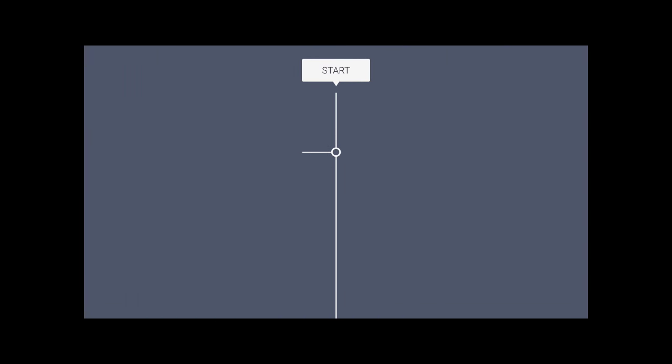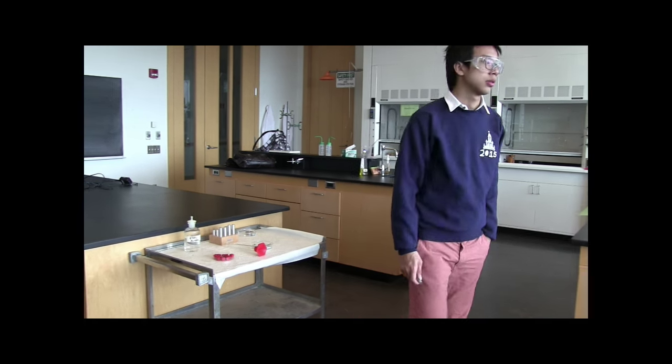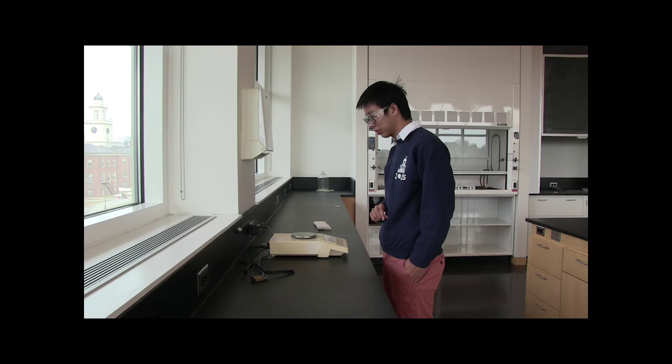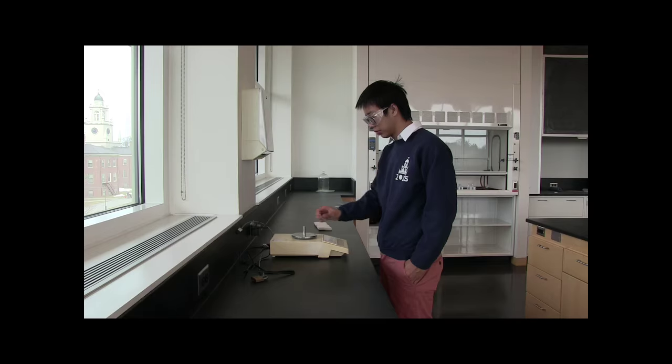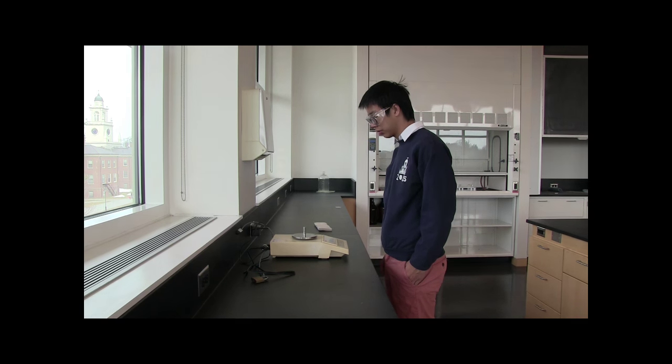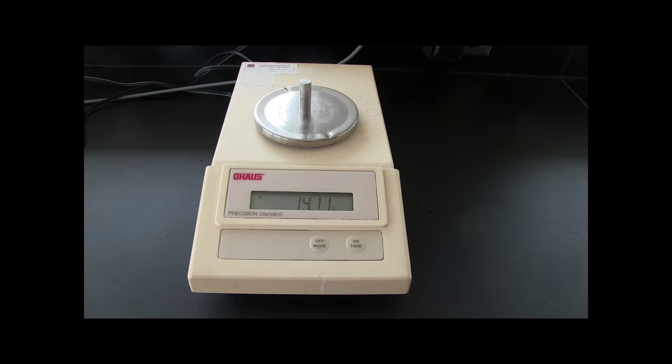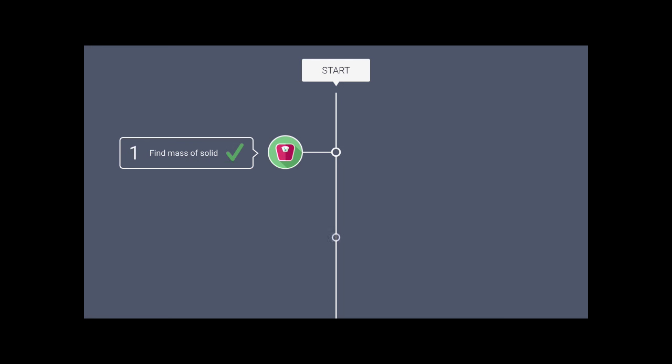Our first step is to find the mass of a solid. To start off, grab any solid from the cart in the center of the lab and head over to the top loading balance. Once you get to the balance, press the on button, wait for the scale to read zero, and then place your mass on the scale. Make sure you write down the value displayed. Pretty easy, huh? That's step one.